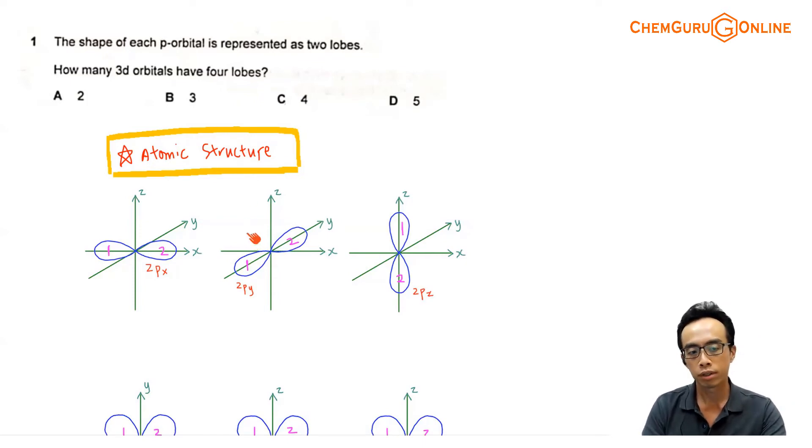And if we consider our 2p subshell, we have 3 p orbitals: 2px, 2py, 2pz. And my 2px will be this dumbbell shape orbital lying along the x-axis. 2py will be the same shape, same size, lying along the y-axis. 2pz will be the same orbital lying along the z-axis. So basically, we have just these 3 p orbitals lying along different axis. That will make up my 2p subshell.